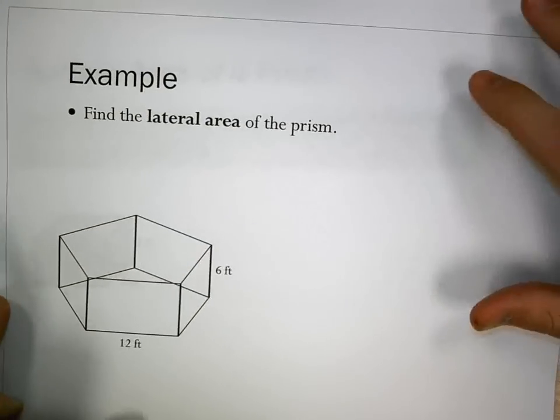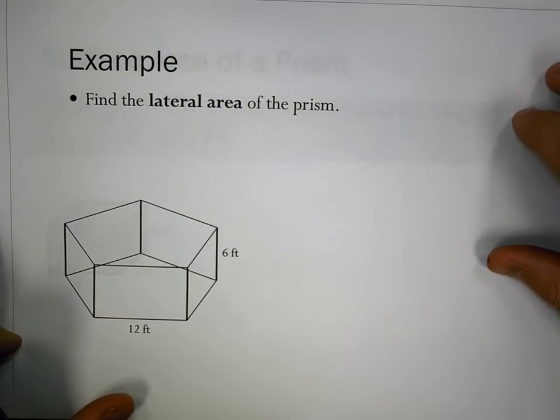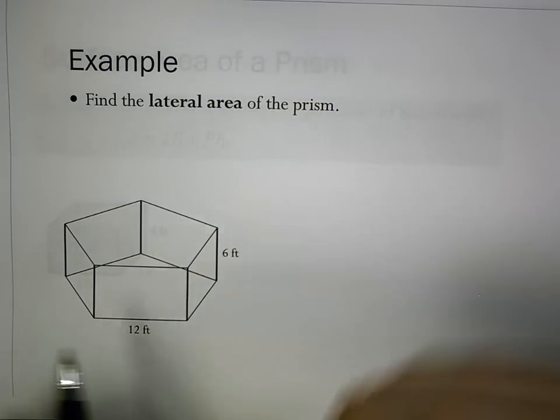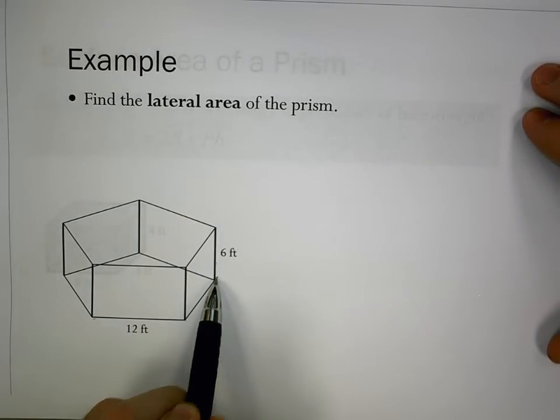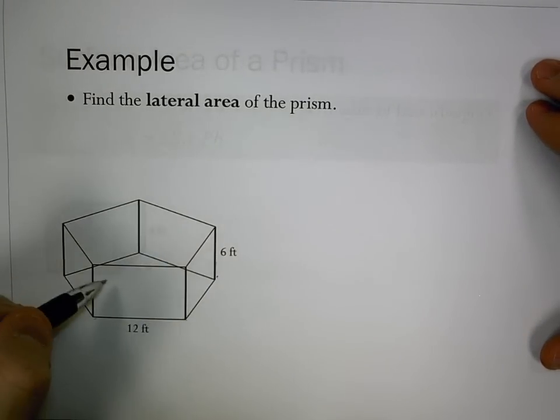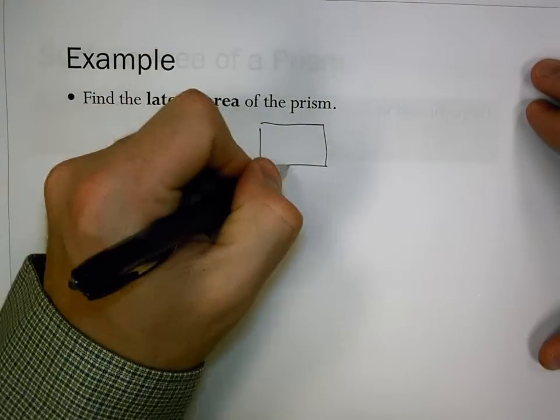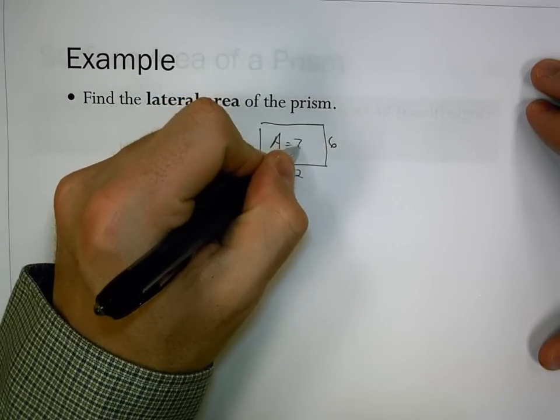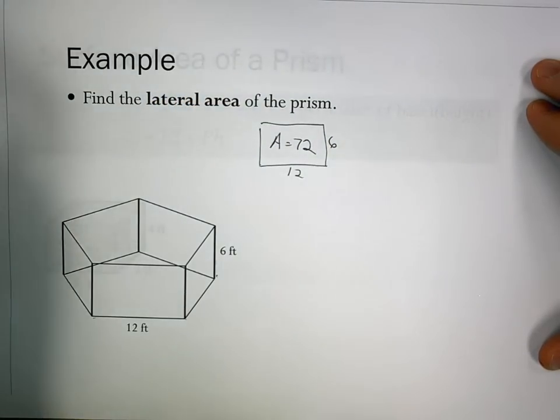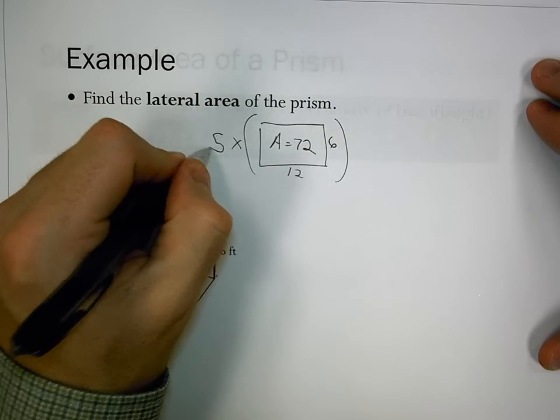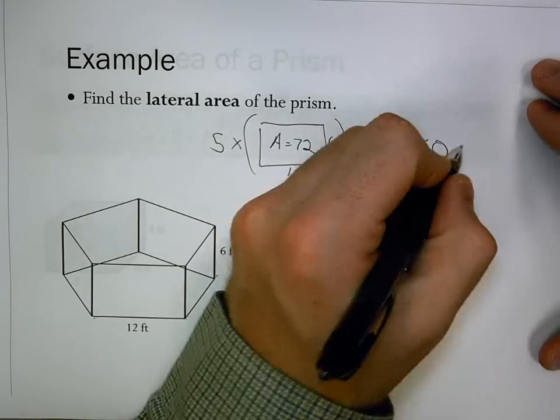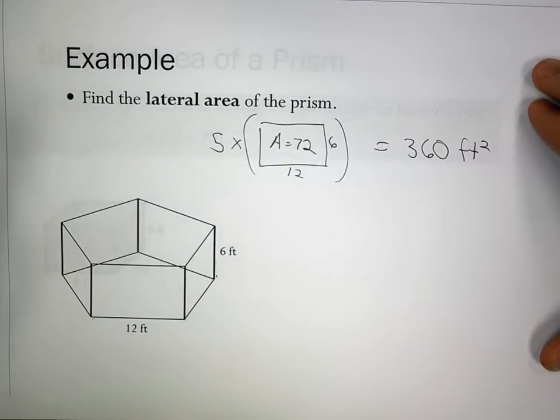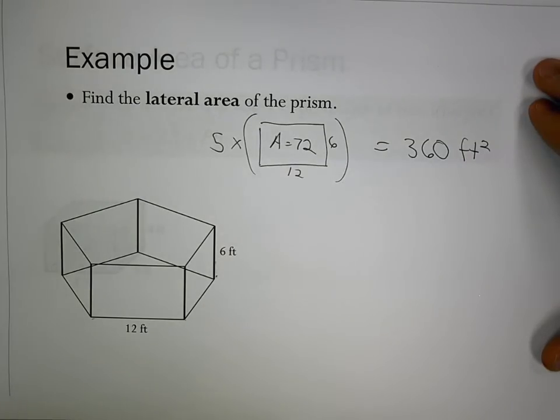Looking at an example with a pentagonal prism where each side length is 12 and the height is 6, each rectangle that makes up a wall is 12 by 6, so the area is 72. We have 5 of those rectangles, therefore 5 times 72 equals 360 feet squared.